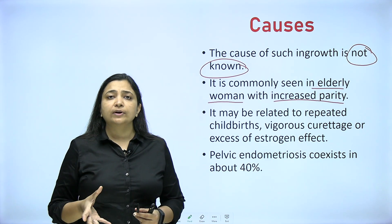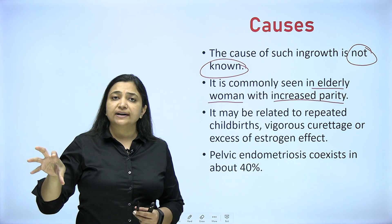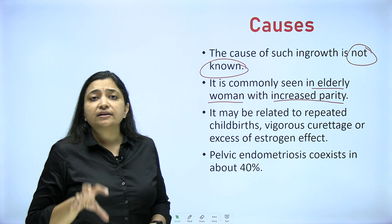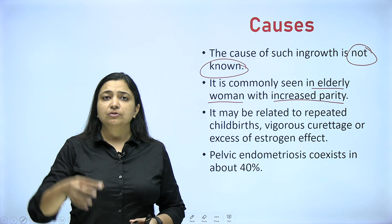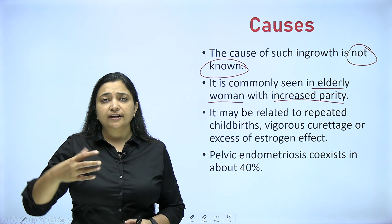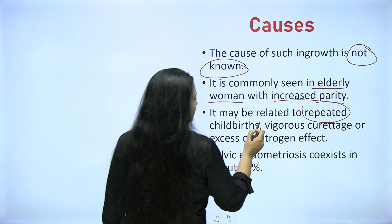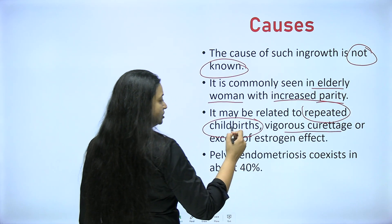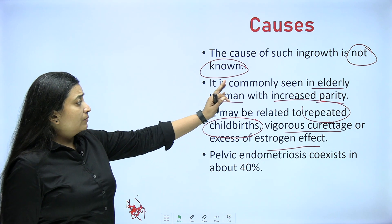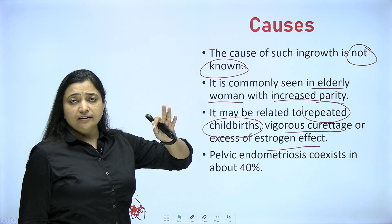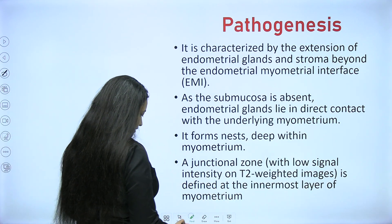There was some problem with the endometrio-myometrial interface, and in those cases there are more chances that the endometrium gets embedded inside the myometrium. That is the reason why the posterior wall of the uterus is more commonly involved in adenomyosis — because if the woman is lying down, the deposits will go backward posteriorly due to gravity. It may be related to repeated childbirths, vigorous curettage, or excess estrogen effect. It is very important that it occurs in elderly women in their 40s with increased parity, contrary to endometriosis. Pelvic endometriosis co-exists in about 40% of cases.